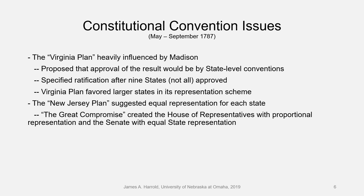That was to the chagrin of states like New Jersey, who said, look, the one thing we like about the Articles of Confederation is that every single state has equal representation. So the first Great Compromise — the one that's called the Great Compromise — created the House of Representatives with proportional representation and the Senate with equal state representation.